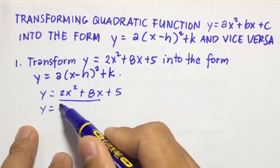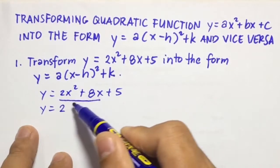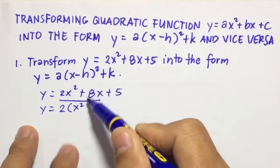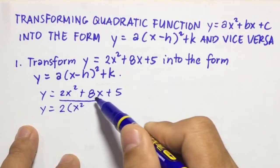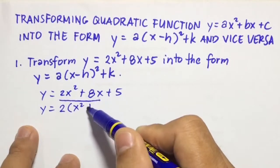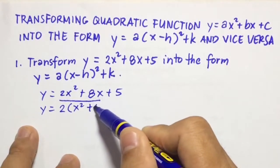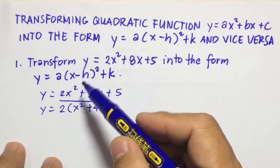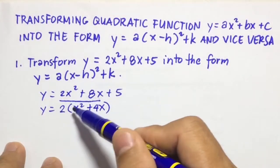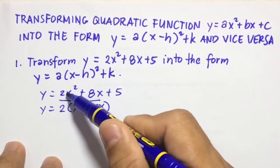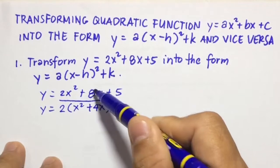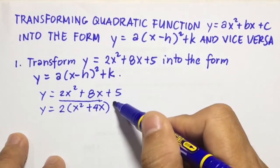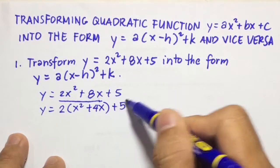So we're going to have y equals 2 times the quantity of x squared, then 8x divided by 2 is 4x, so this will become plus 4x. So if we multiply this 2 here: 2 times x squared is 2x squared, 2 times 4x is 8x. Then we're going to have here plus 5.